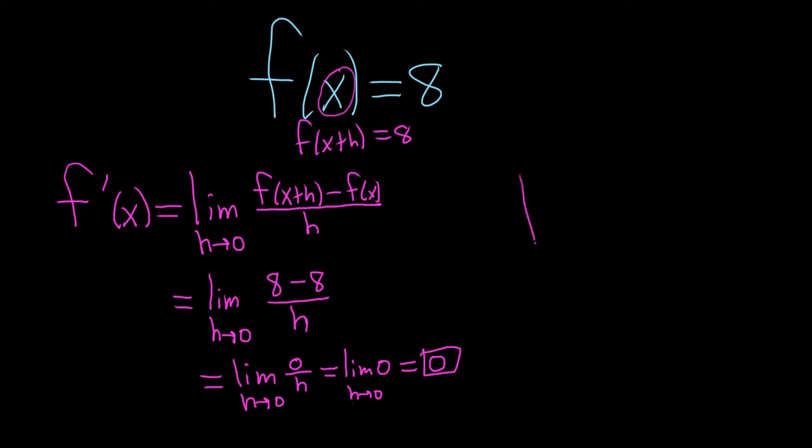Intuitively, that should make sense. If you look at the graph of this function, it's just this, right? This is the graph f of x equals 8. This is the graph of this function. And so intuitively, the derivative is the slope of the function. Well, the slope here is 0 because it's a horizontal line, right?